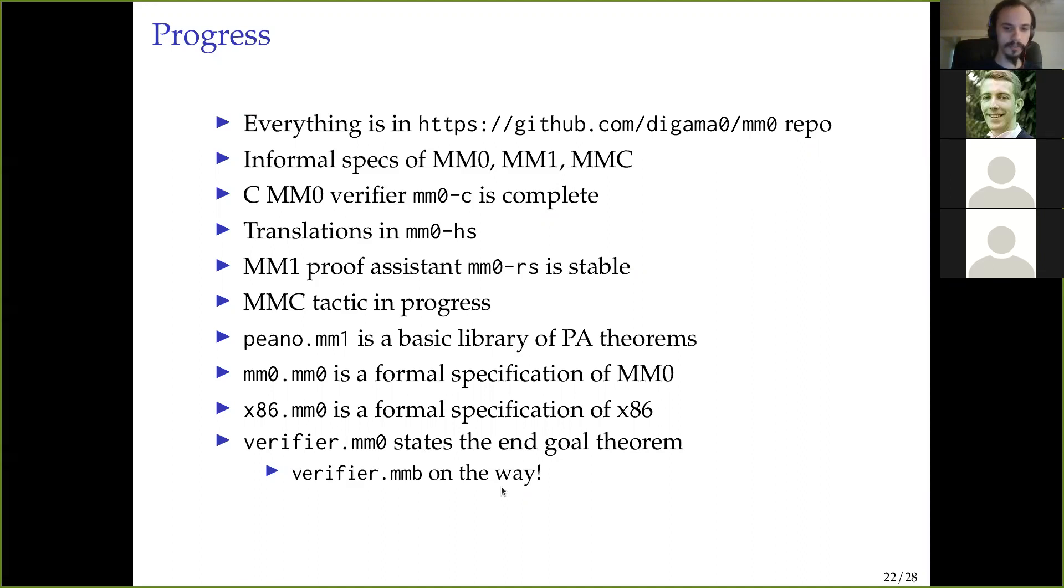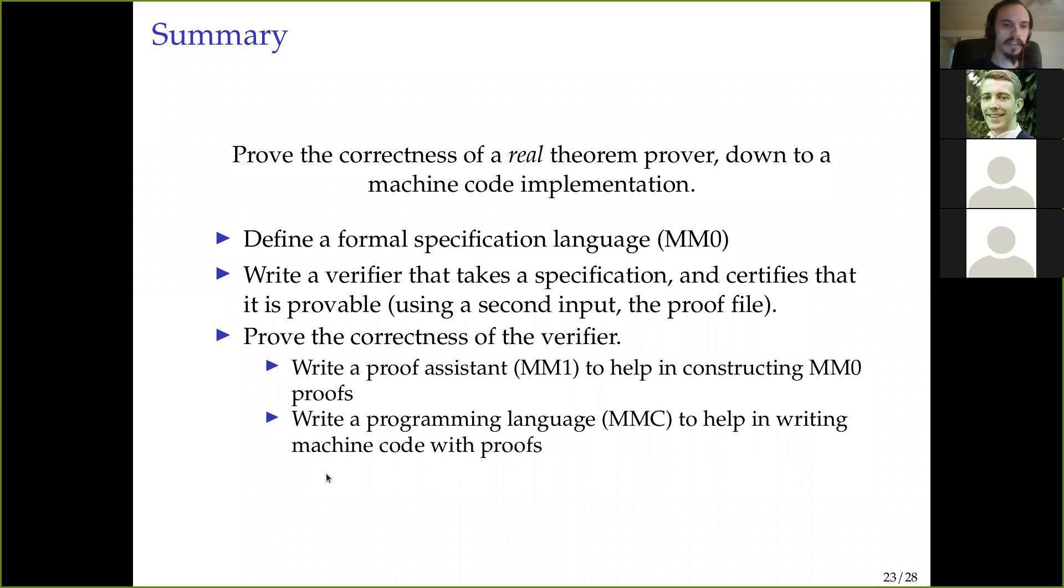This has informal specifications of all of these three languages. There is a MM0C verifier. The translations are in the Haskell verifier. And the MM1 proof assistant in Rust is pretty stable. We have this MMC tactic is still a work in progress. And then there's a bunch of proof files. So Peano has a library of theorems in Peano arithmetic. MM0.MM0 is the formal specification of MM0 inside its own language. And this is the specification of x86.